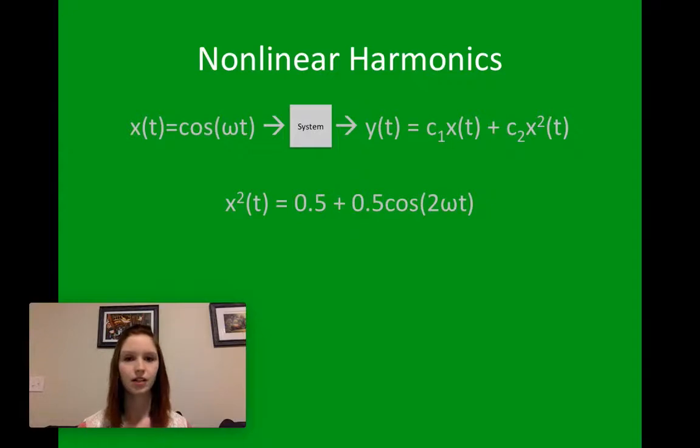So, to talk about nonlinear harmonics, for instance, let's say we have just cosine of omega t, ignoring A for now. That goes into our system, and we get y(t) equals a constant times x(t) plus another constant times x squared of t. We know that x squared of t makes this output nonlinear. But if we really look at x squared of t, it's going to be a half plus a half times cosine of 2 omega t in our system.